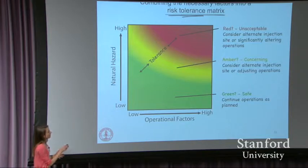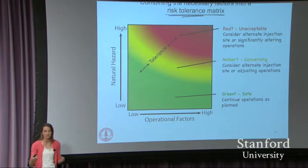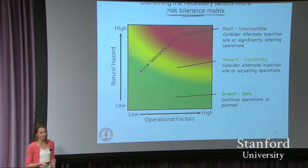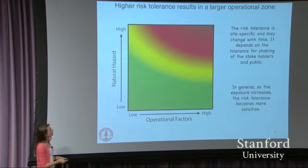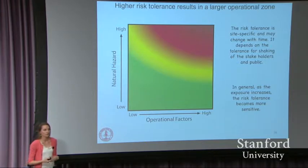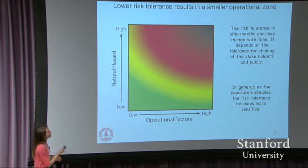This green-to-red scale is somewhat arbitrary — each individual site and state needs to think about it in a site-specific manner. Perhaps the color spectrum could be shifted to the left for higher risk tolerance, or shifted to reflect lower tolerance, where you have a larger red region and people just don't have much tolerance for ground shaking. These are the types of things that need to be thought about on a site-specific basis.